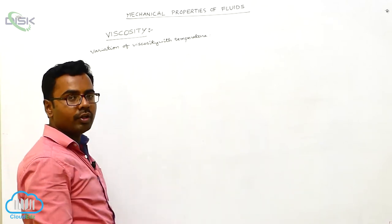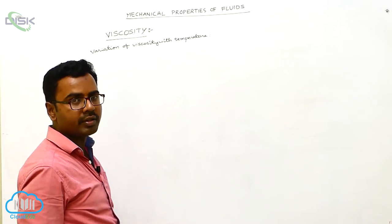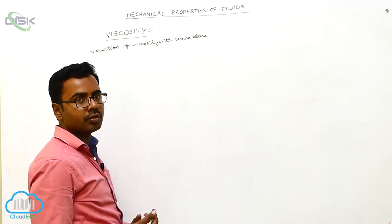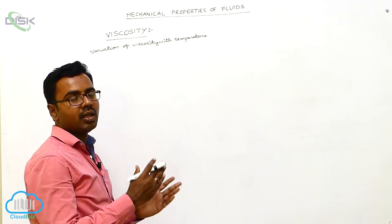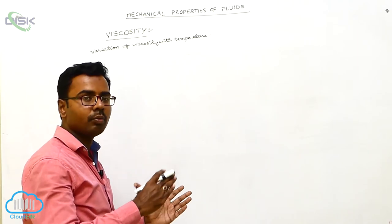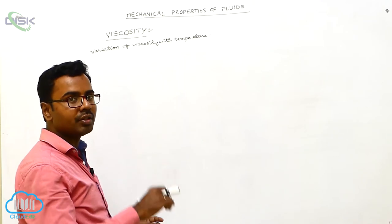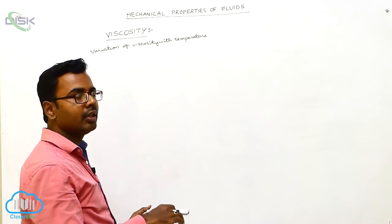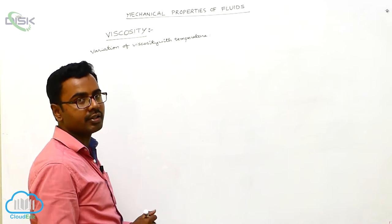When temperature increases for liquids, what happens to the viscosity — what happens to the viscous force? As temperature increases, liquids expand. As liquids expand, the separation between the molecules increases. As separation increases, the cohesive force decreases. If cohesive force decreases, then viscous force between the two layers of liquid decreases.